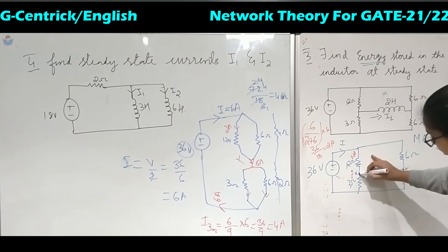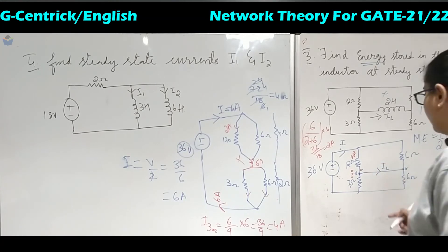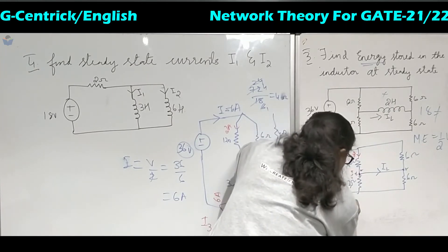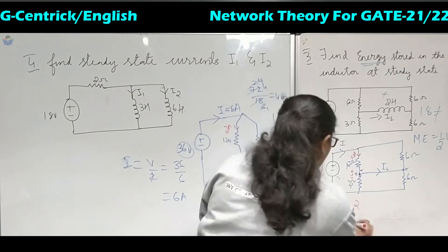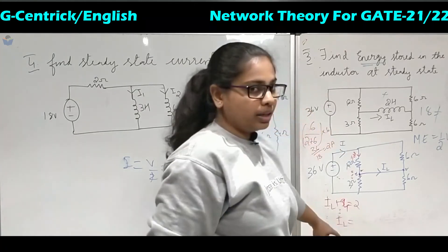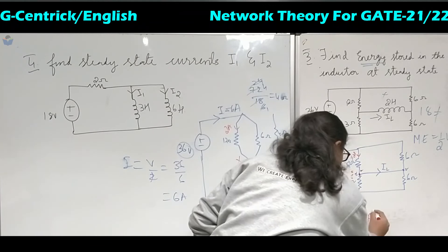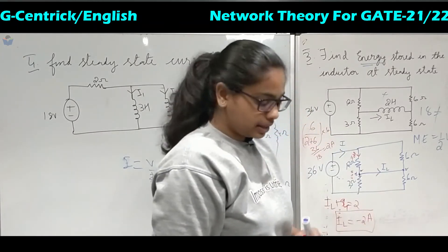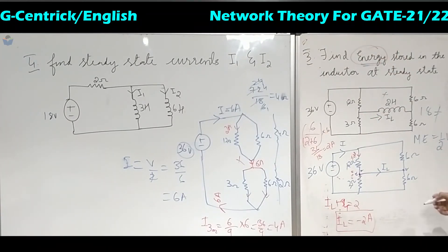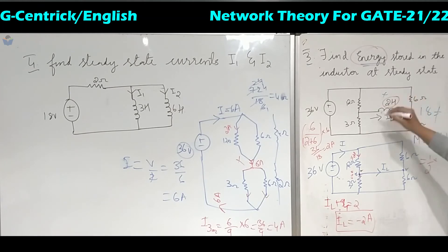Now using KCL at point A we can calculate the value of IL. This current is leaving, this is entering, and this is also leaving. So IL plus 4 equals 2, and the value of current through the inductor is minus 2 amperes. They have asked us to calculate the energy. The formula is ½LI²: half into L equals 2 Henry, into (−2)², which gives the energy stored in the inductor.